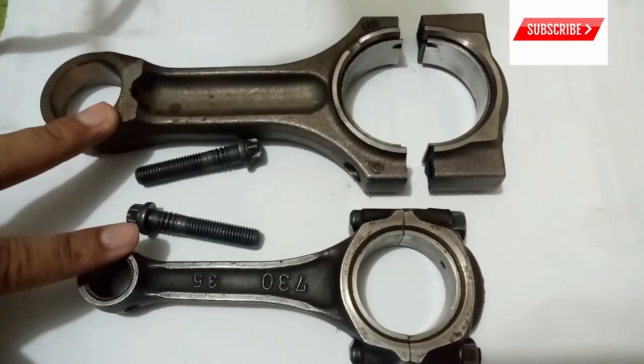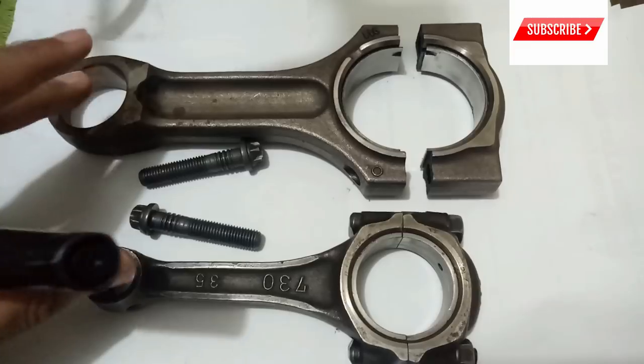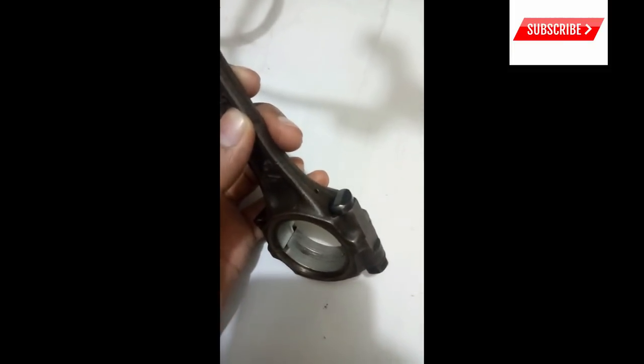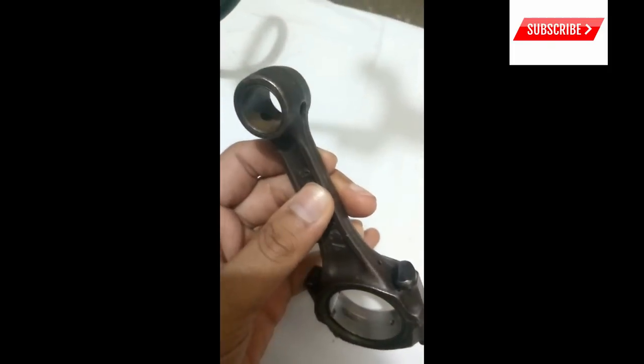Connecting rods are usually made by drop forging, and the materials used to make them are aluminum or steel alloys. You can see these holes on the surfaces of the connecting rod. These holes are used for lubrication purposes for the connecting rod as well as the piston of the engine.